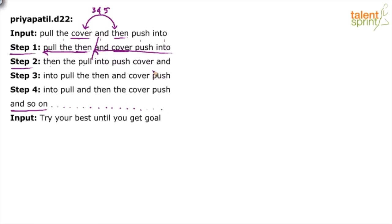We can confirm it once we move forward to the other steps. But in step 2, we have divided step 1 into two parts — first 3 words and last 4 words. The first 3 words have been reversed: pull the then becomes then the pull. And the last 4 words have also been reversed: and cover push into has become into, push, cover, and.